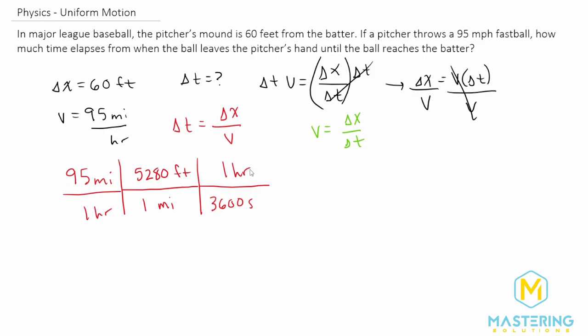This was found from the useful data section at the beginning of the book. Or you could have gone into minutes and then seconds, but it would have been 60 times 60, which is 3,600, of course.